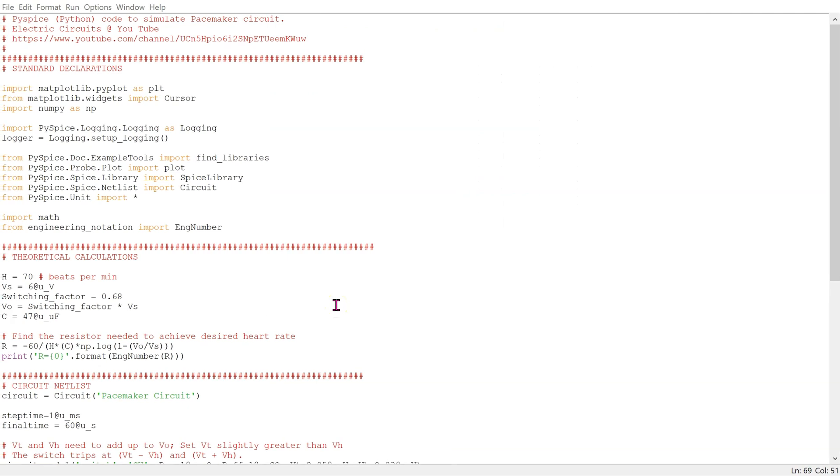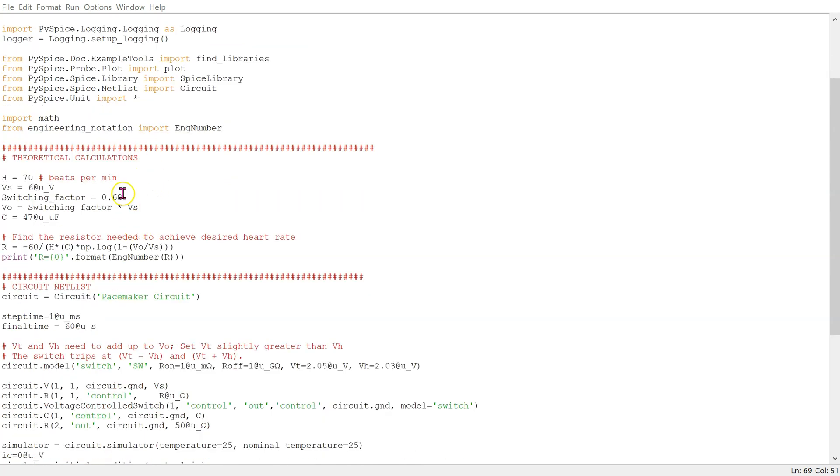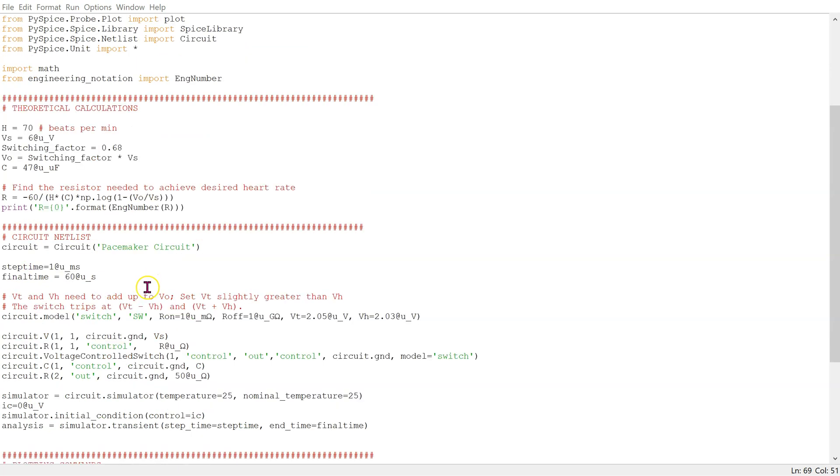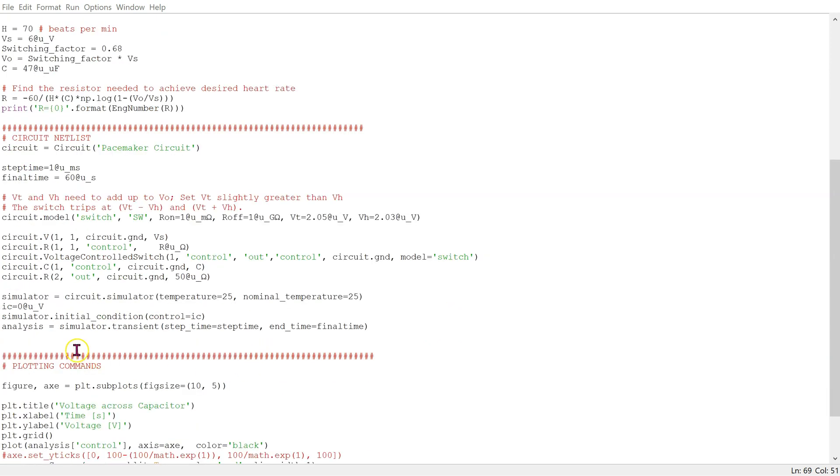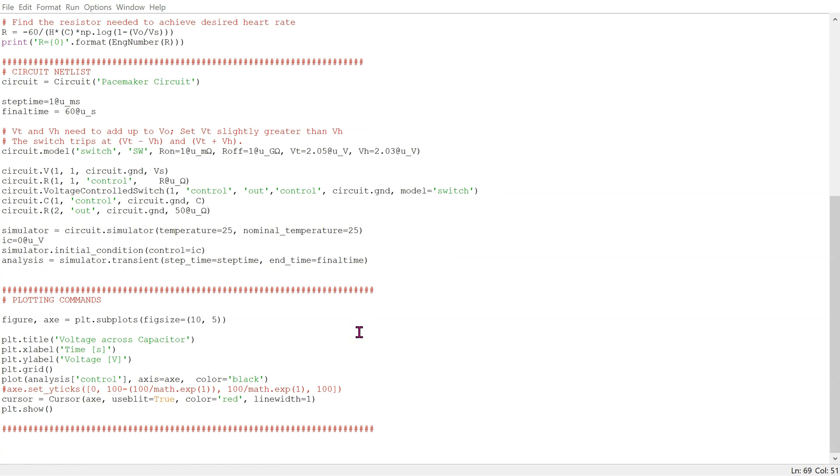This is the complete PySpice implementation. The code is available in the video description as well as the comments section below. We have standard declarations at the top. We define the design parameters and calculate the required resistance. This value is then input to the circuit. We have the circuit netlist here. We are running transient simulation and finally we have the plotting commands.